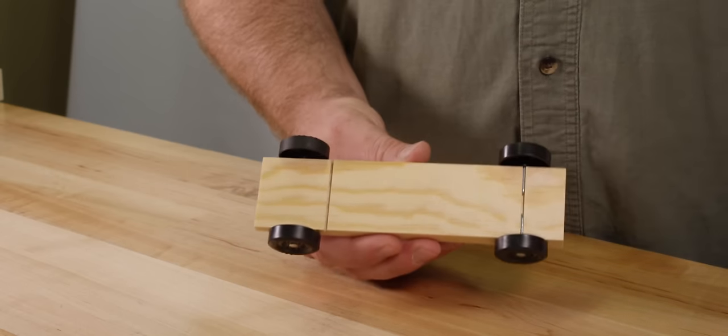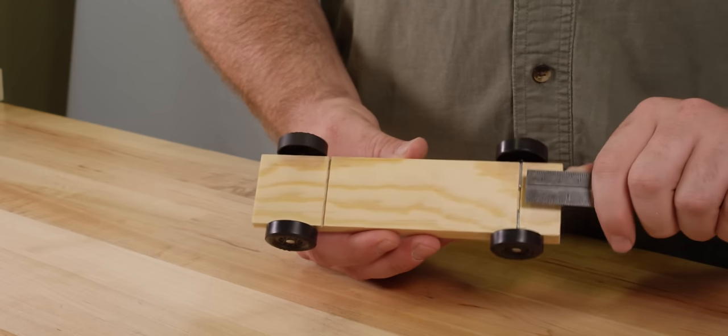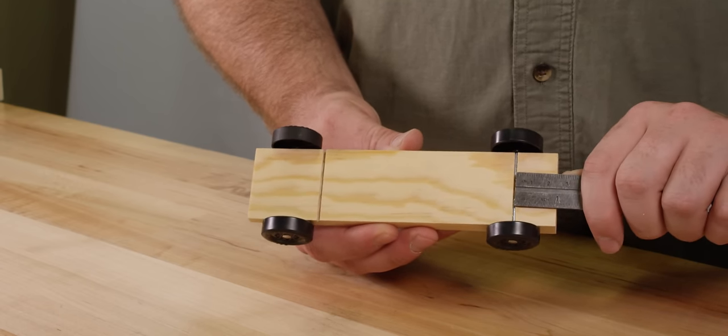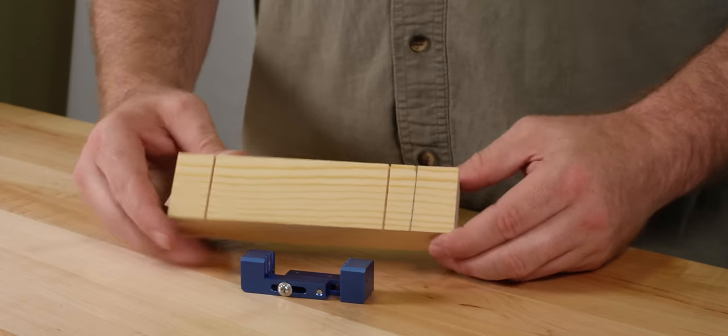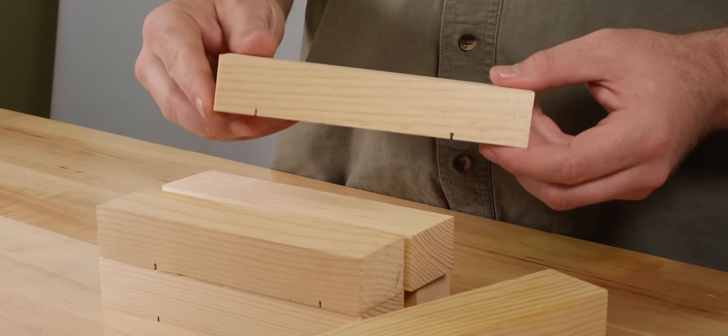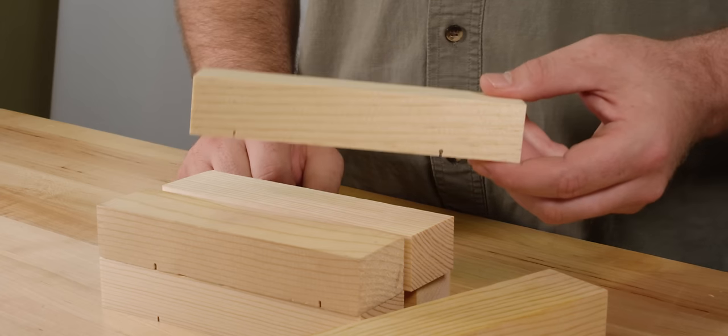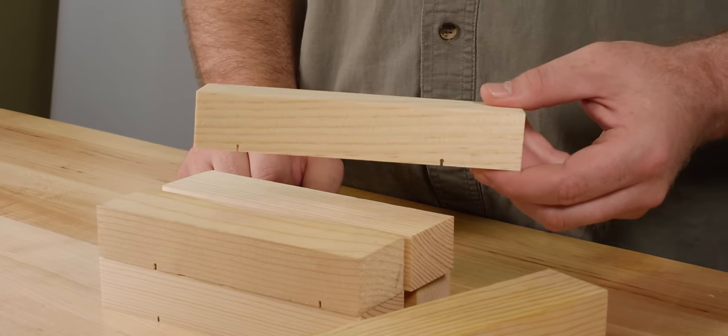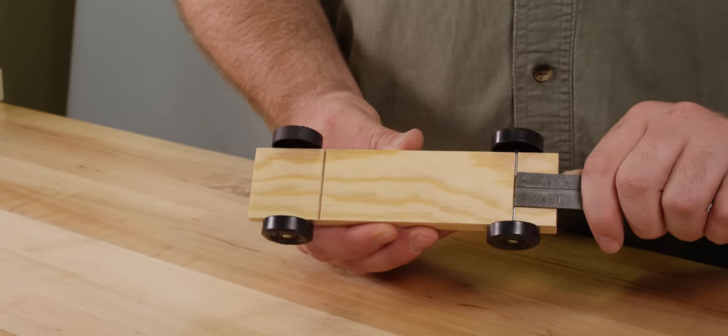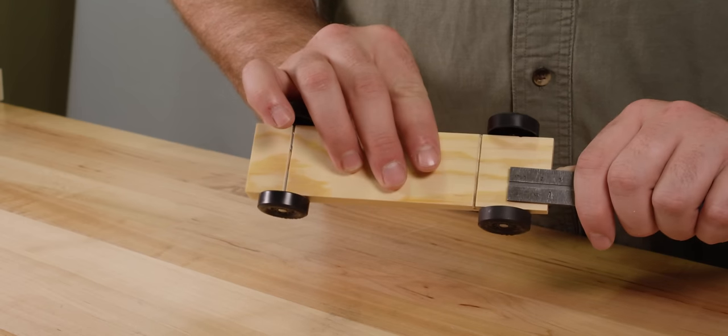BSA Pinewood Derby blocks have one axle slot cut seven eighths of an inch from the edge of the block. The other axle slot is one and three quarters inch from the edge of the block. Other car kits such as Awana Grand Prix may cut their slots slightly different. So, how do we make an extended wheelbase car? For example, on a BSA block, you would simply drill axle holes seven eighths of an inch from the long end of the block to match the distance of the axle slots on the other side.